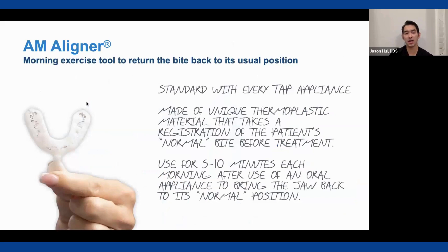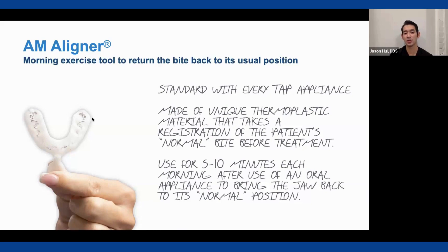The FlexTap still comes with an AM aligner — a thermocryl-type bite repositioner. You heat it for about three to four minutes, place it in the mouth, have them bite in their normal position with back teeth touching, and once it sets it acts as a morning bite repositioner. This comes standard with every TAP appliance.